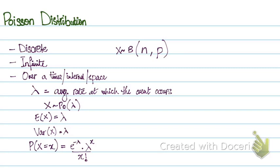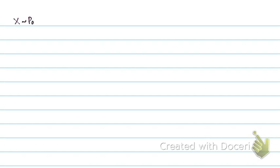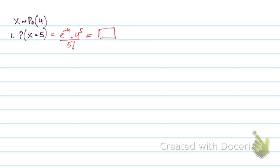Let's move on to a question. Let's say x follows a Poisson with lambda equals 4. We have to find the probability of x equals 5. To solve this, all I have to do is apply the formula: e to the power minus 4, multiplied by 4 to the power 5, divided by 5 factorial. And I get my answer.